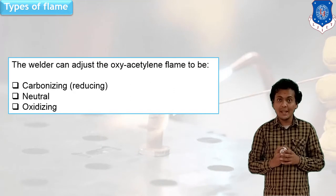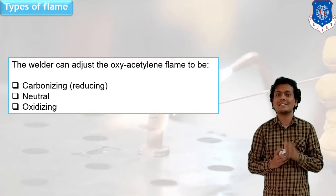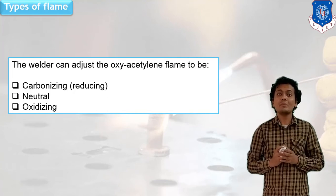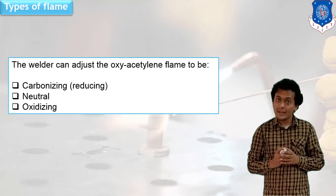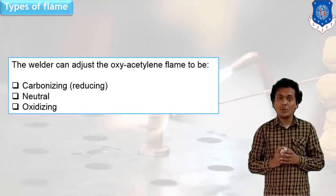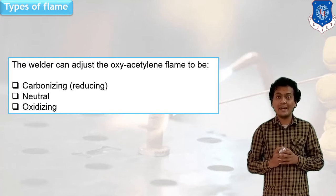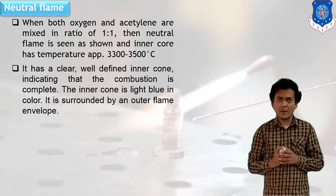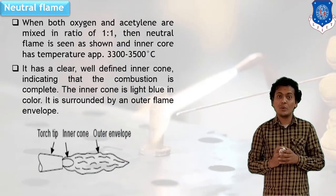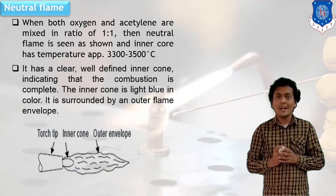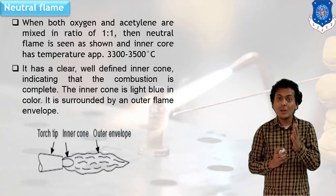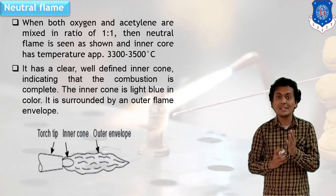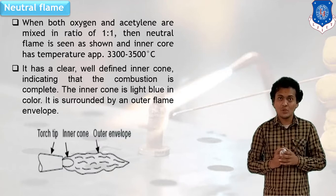In gas welding, a flame will be generated by burning of both gases. Generally, three types of flame can be found in gas welding: neutral, oxidizing, and carbonizing or reducing flame. The first one is a neutral flame. In the neutral flame, oxygen and acetylene are both in equal proportion — meaning when the flow rate of both gases is the same, a neutral flame will be generated. The average temperature generated in this flame is around 3500 degrees Celsius.